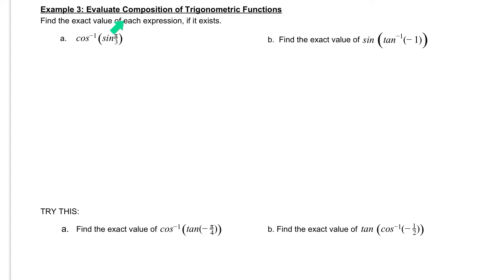In example 3, we want to find the exact value of each expression if it exists. Letter A: we have the cosine inverse of the sine of pi over 3. First thing we need to know is what is the sine of pi over 3. So, sine of pi over 3 is our first task.